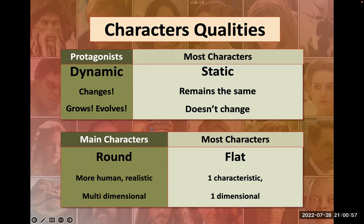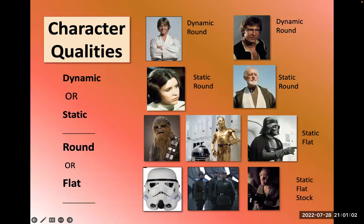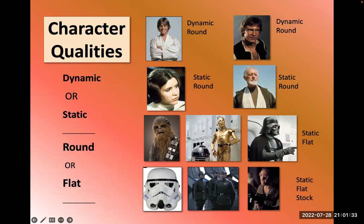In Star Wars: Luke and Han go through changes. Princess Leia is a round character but stays pretty much the same throughout the film. Obi-Wan doesn't change — same wise wizard, though he does die. Chewbacca is flat — we don't learn anything new about him, he just growls. The stormtroopers are static, flat, and stock characters.